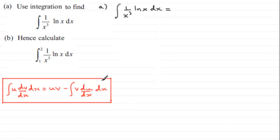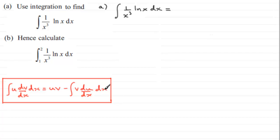Just as a quick reminder, here's the formula. I've done examples on integration by parts — you can find tutorials on my website examsolutions.net. The formula is: the integral of u times dv/dx with respect to x equals uv minus the integral of v times du/dx with respect to x.